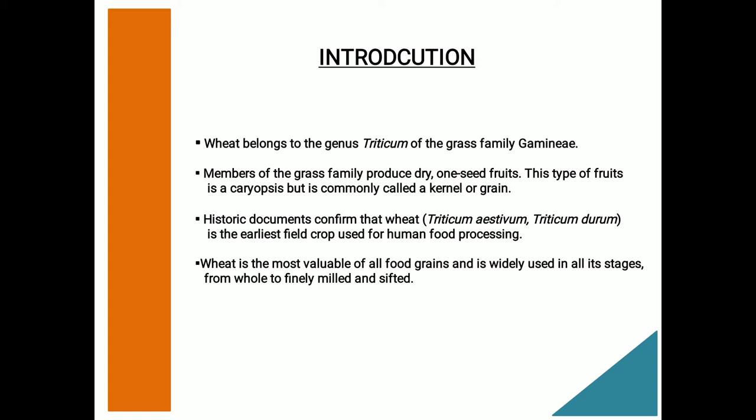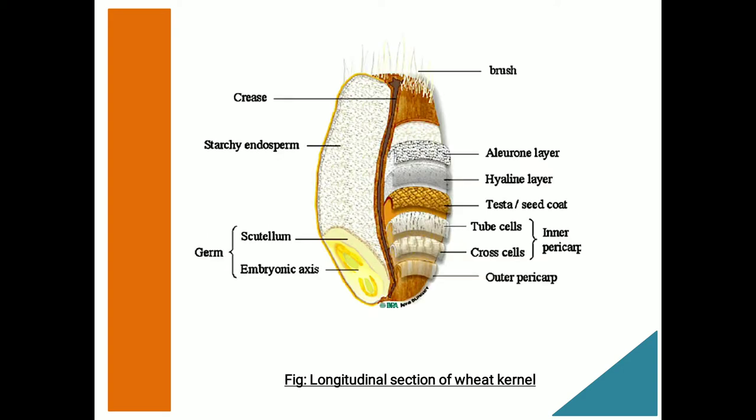Some historic documents also confirm that wheat is the earliest field crop used for human food processing. The length of the whole wheat grain is about 8 mm and the weight is about 35 mg. In some kinds of wheat, the tip of each kernel is covered by stiff hairs called brush, which you can clearly see in this diagram.